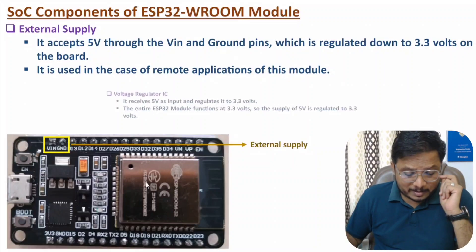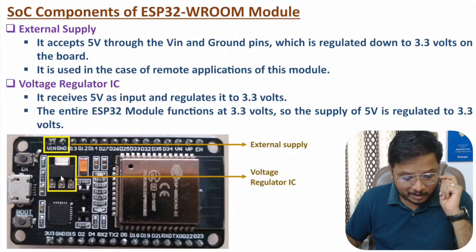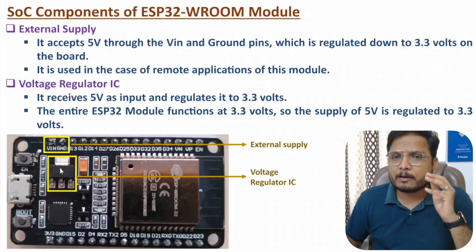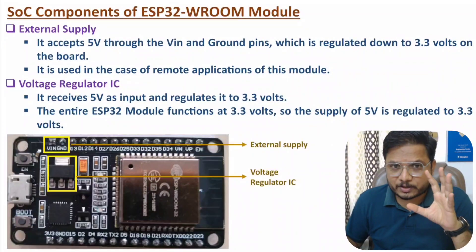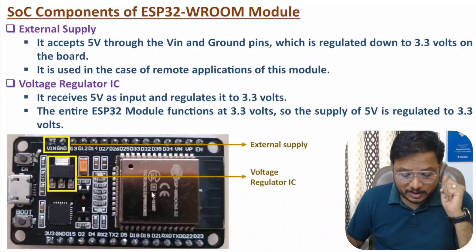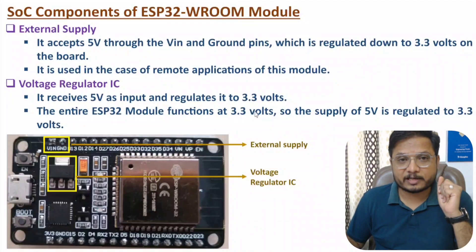Now let me discuss about the next SoC component, that is the voltage regulator IC. As I have told you, here we provide a power supply of 5 volts, but the entire processor and IO ports function at 3.3 volts. So this voltage regulator IC regulates the voltage and provides an output of 3.3 volts.